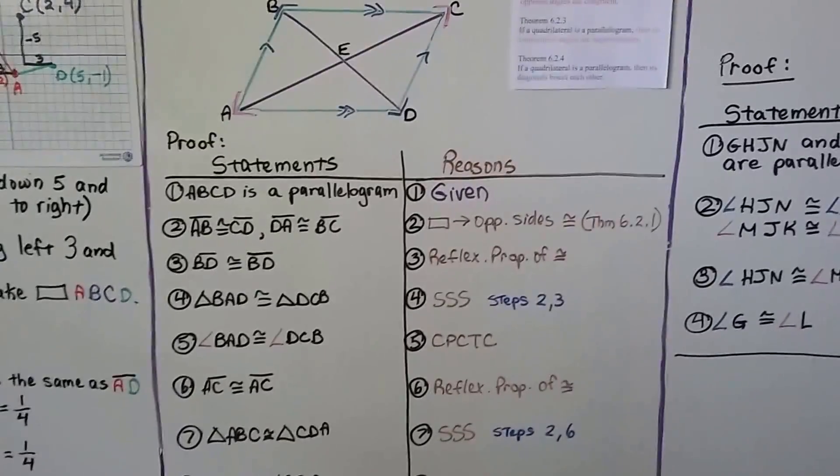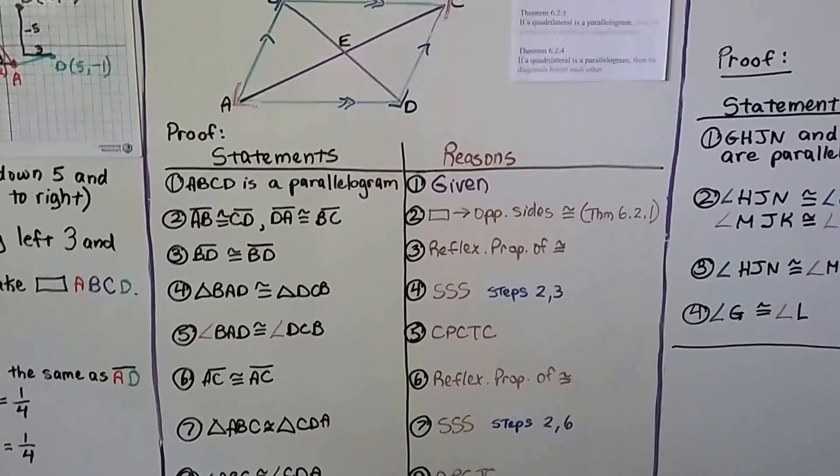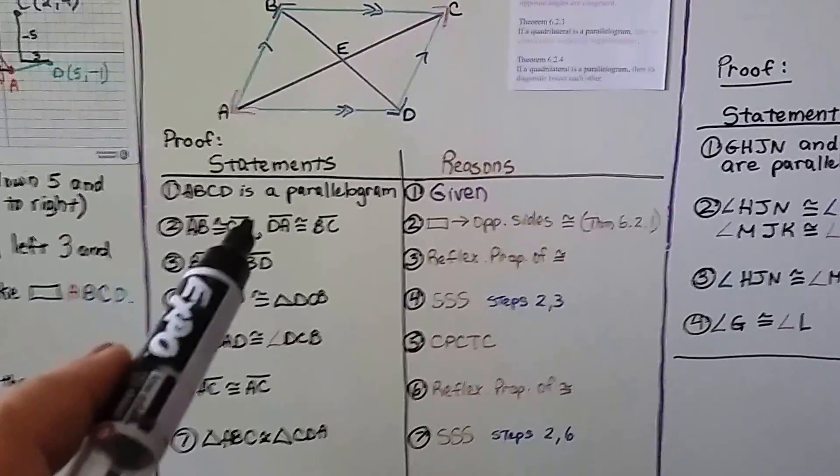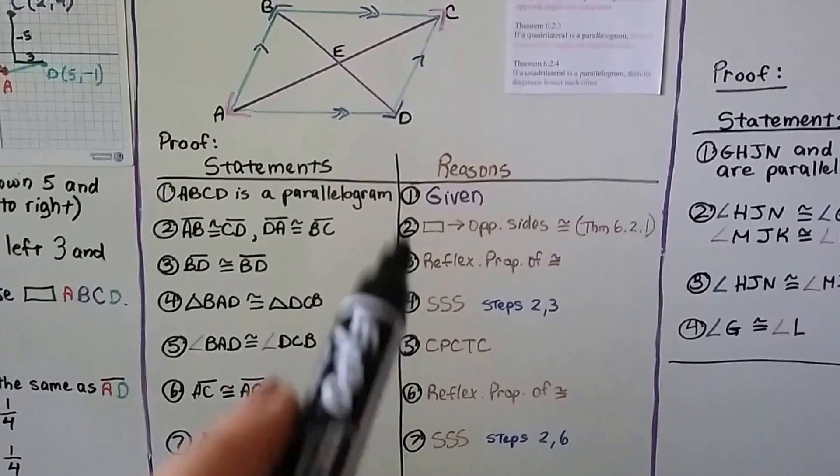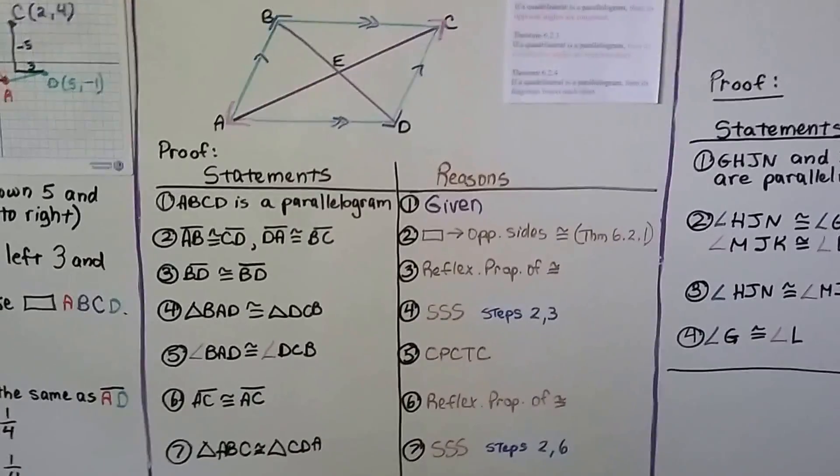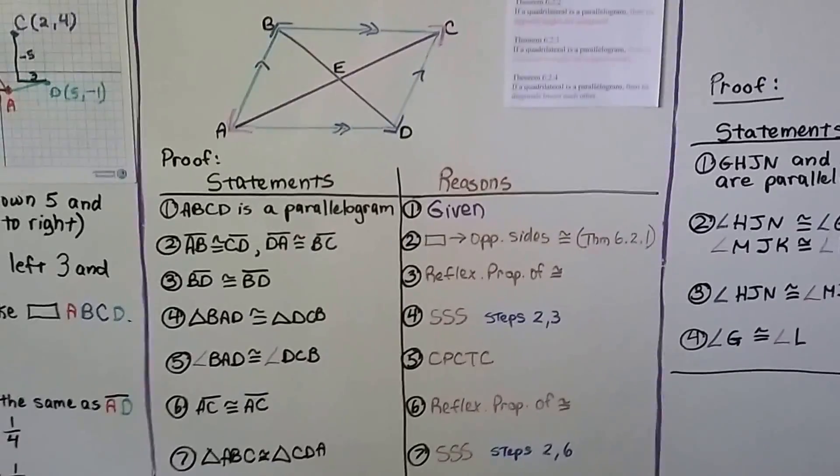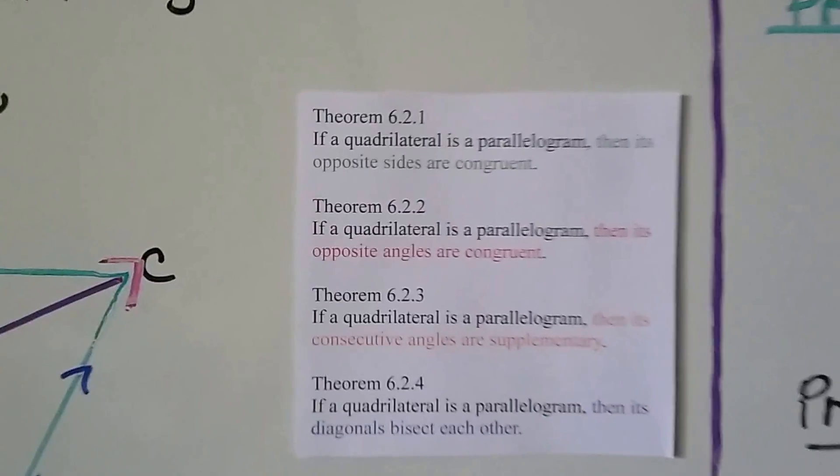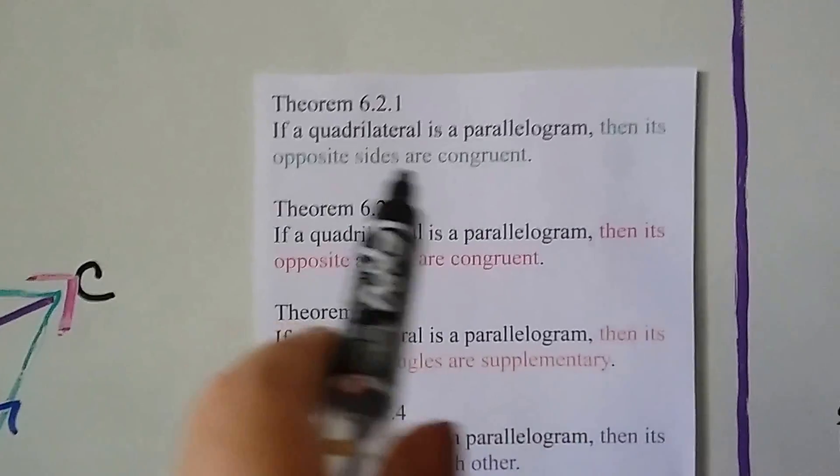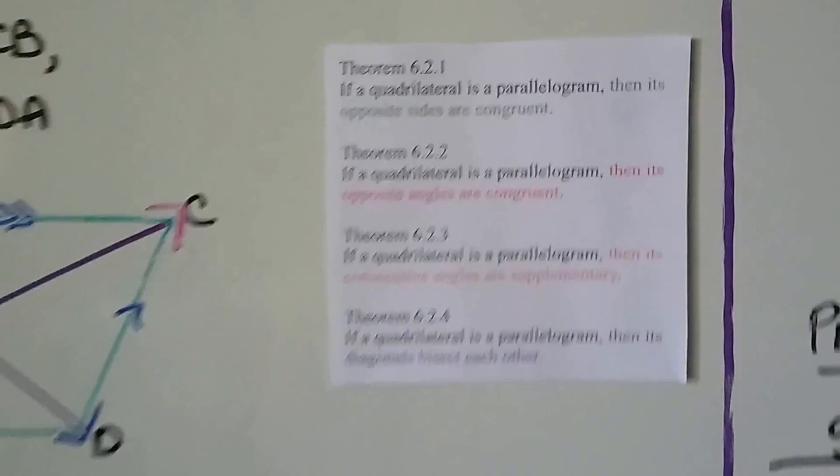ABCD is a parallelogram. Well, that was given. And segment AB is congruent to segment CD, and segment DA is congruent to segment BC. Well, that's because the opposite sides are congruent. That's from our first theorem from the last video. If a quadrilateral is a parallelogram, then its opposite sides are congruent.